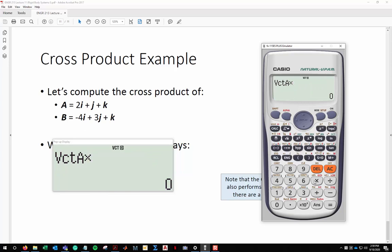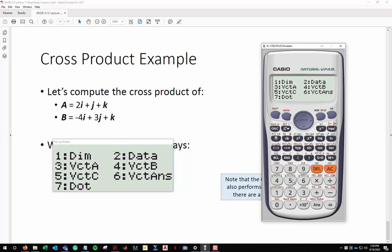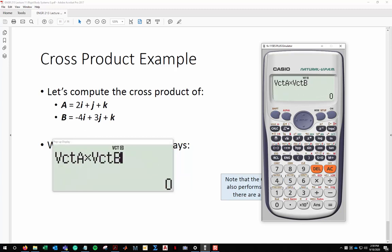And to do cross products, you just multiply them. So vector A, cross, shift, vector, 4, vector B. Press enter. And there you go, 2, 6, oh, sorry. Let's do that again.